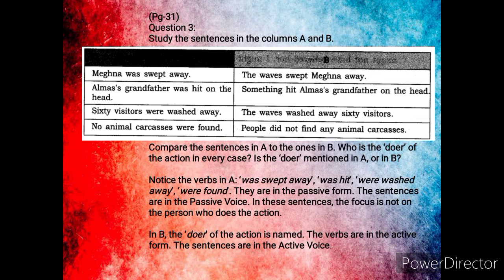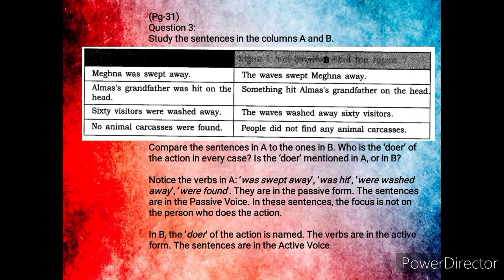In the second example: 'Alma's grandfather was hit on the head' and 'something hit Alma's grandfather on the head.' Here, the doer is 'something.' Third: '60 visitors were washed away' and 'the waves washed away the 60 visitors.' Again, in column B, the waves are the doer.